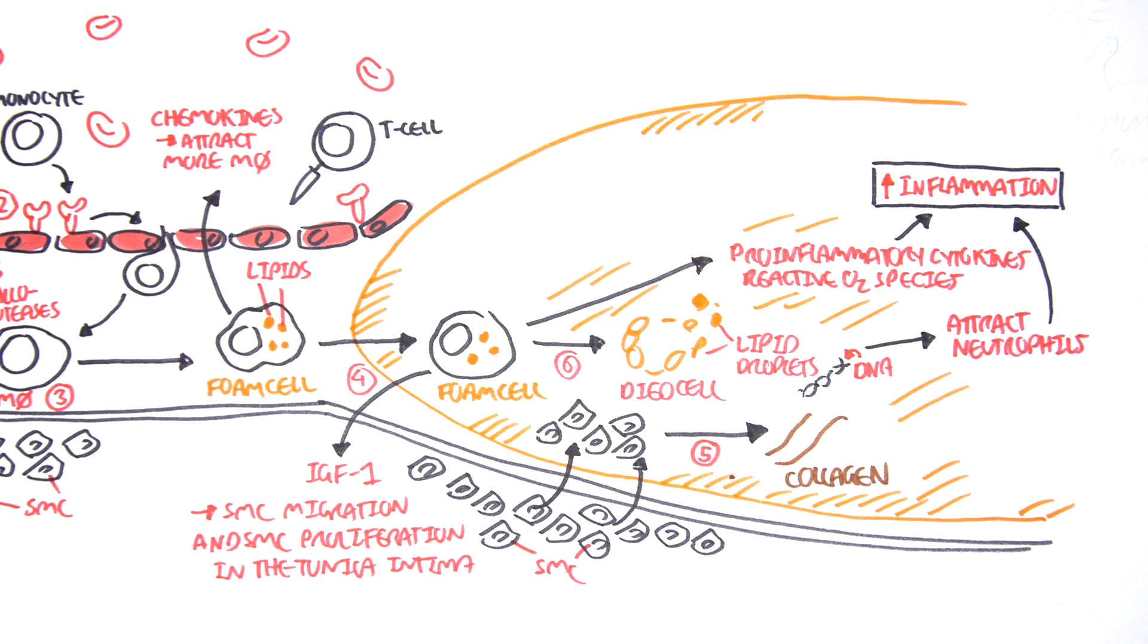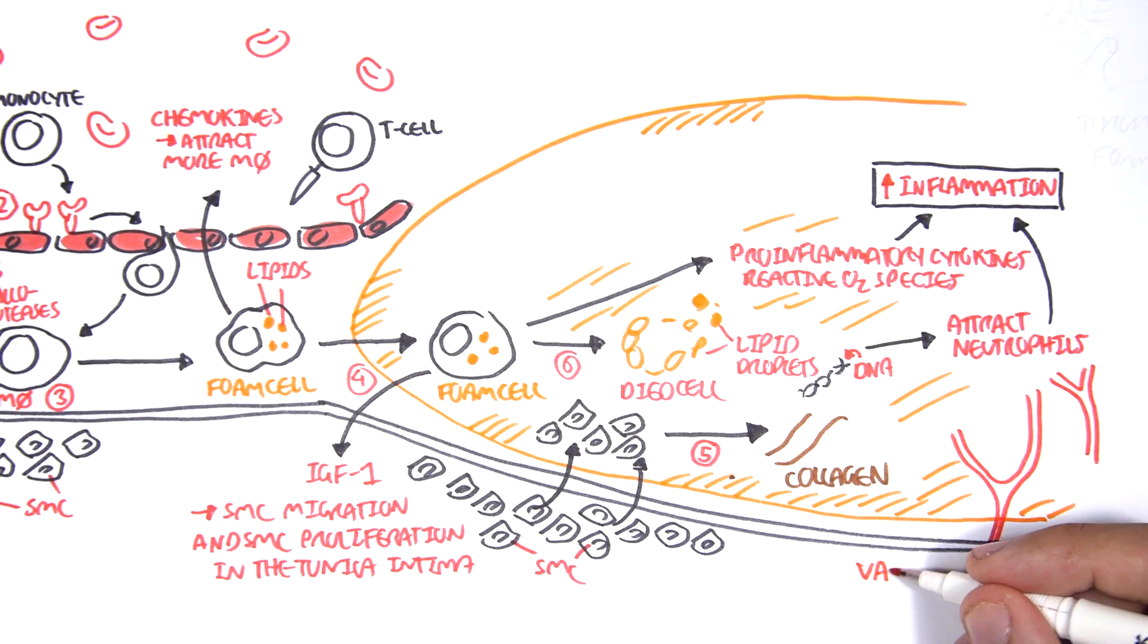Another interesting thing that occurs is there is an increase in blood supply to the layer of the tunica intima, to the vessel. So if you didn't know, blood vessels have their own vessel supply. And these vessels are known as vasa vasorum.